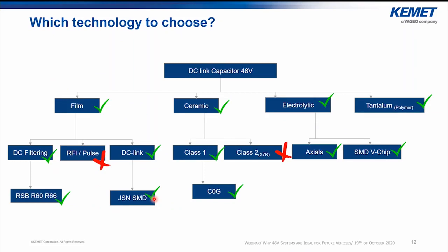Taking voltage as a reference for comparison between all technologies, we can offer our entire capacitor portfolio. From the film technology, we can select the low-voltage DC filtering families RSB, R60, and R66, and from the DC-link low-voltage series, the GSN SMT series. All of these series use PET as the dielectric, because it has the ability of low thickness compared to other dielectric types, which is very helpful for low-voltage applications. This series provides the best efficiency in terms of capacitance and volume.